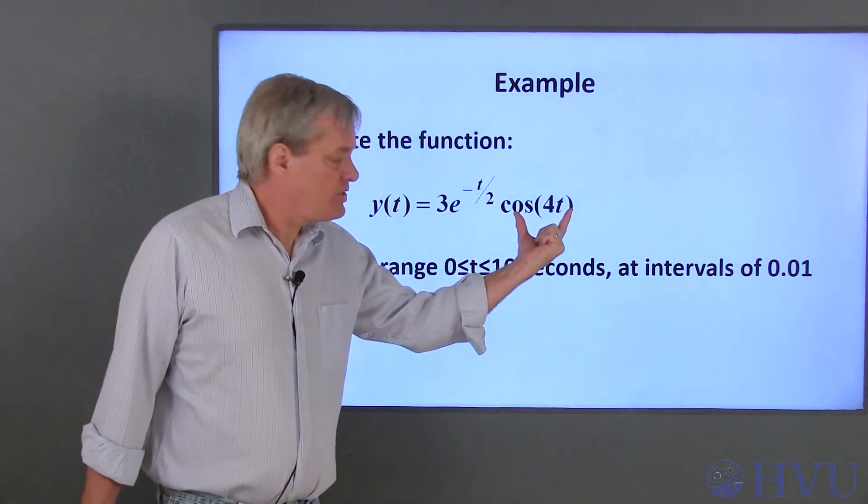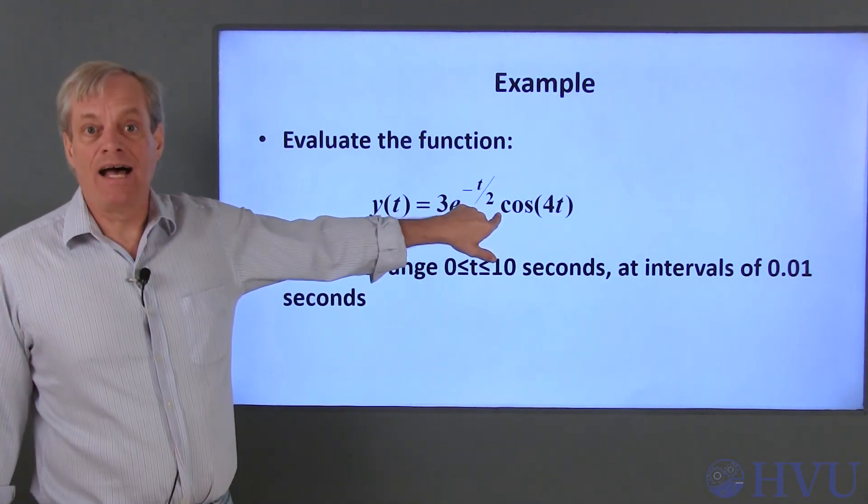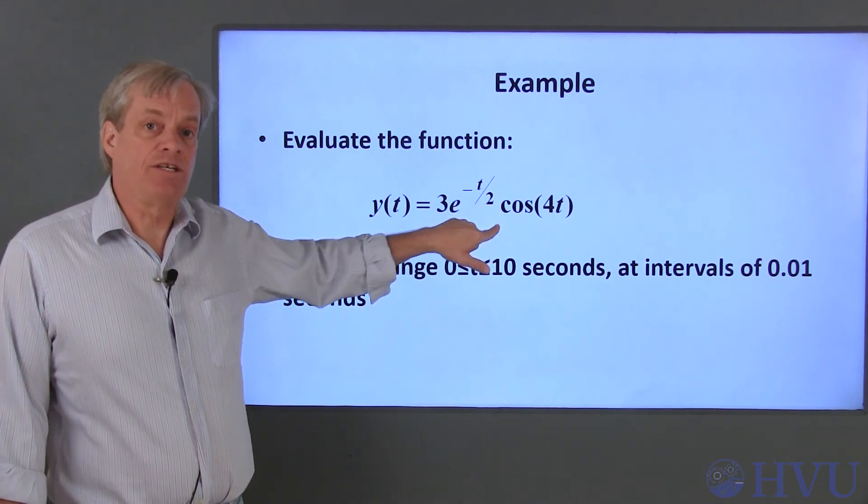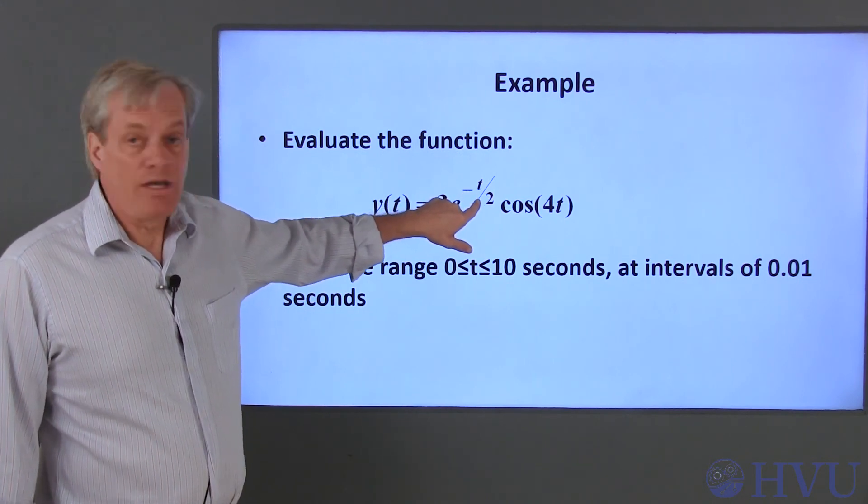We need to multiply these two vectors together point by point, so we'll use a dot times operator between the two of these. The scalar multiplications and divisions, the 3 times here, the t over 2 here, and the 4 times t here.